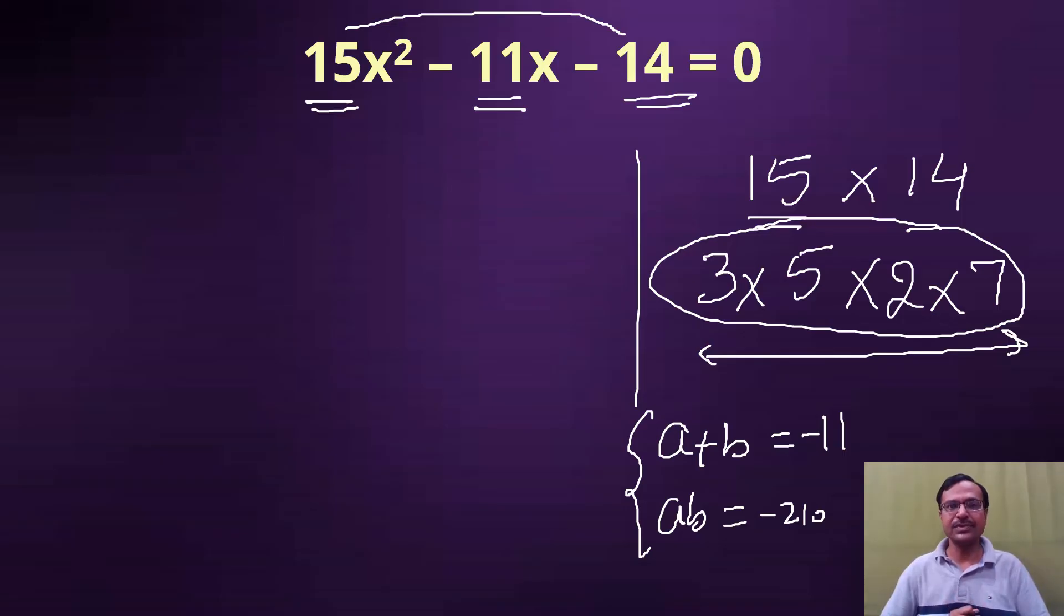Very difficult job. Teachers are complicating the things for the students rather than simplifying it. So I always say to my students, 15 times 14 is to be broken down into factors. How many factors you have? 4. So we need to reduce them to 2 factors such that not the sum, it can be sum or difference should be this number 11.